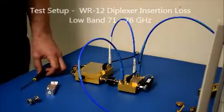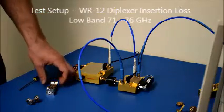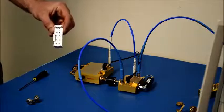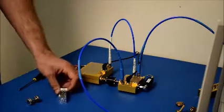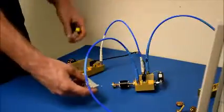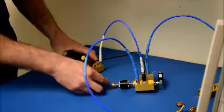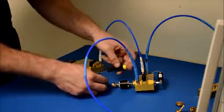Now that we have the system calibrated, we're going to demonstrate measuring the insertion loss of this WR12 diplexer, which has a low band of 71 to 76 GHz and a high band of 81 to 86 GHz. We've added a 1 inch piece of waveguide to the diplexer just to make the setup assembly easier. We'll be measuring the insertion loss of the input port to the low frequency channel.